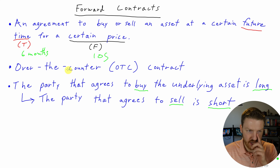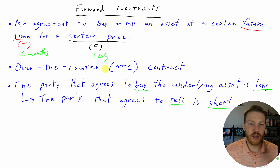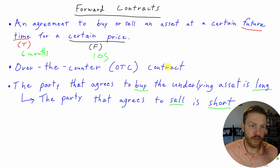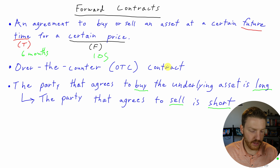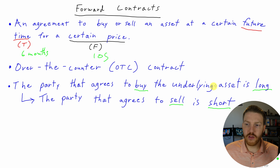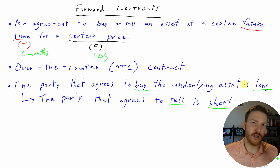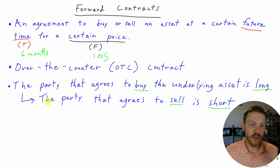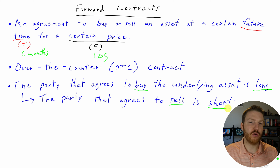So six months is T. This is an over-the-counter contract because we just made a handshake agreement with one another — we didn't go through an exchange to make this contract. The party that agrees to buy the underlying asset is the long, so I'm the long. And the party that agrees to sell is the short, so the financial institution selling me that share is the short.